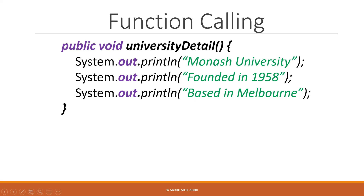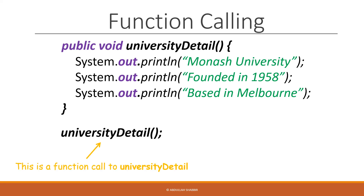For our program UniversityDetail, we now have completed its function definition. But how can we actually use this? To actually use a function inside our program and prompt this whole code block to run, we have to call it. The function call just means that we have to refer to this function by its name. In this case we write UniversityDetail with empty parentheses, followed by a semicolon.